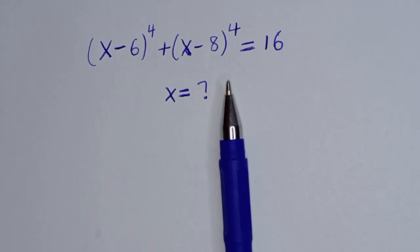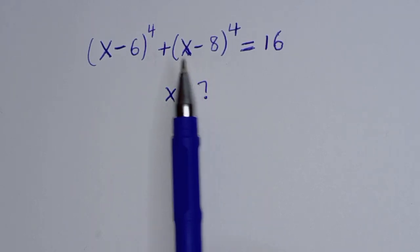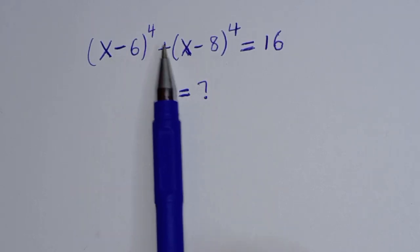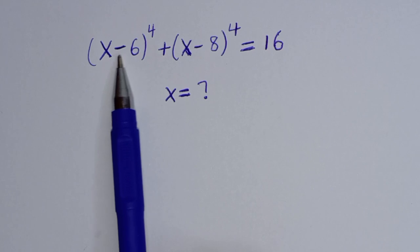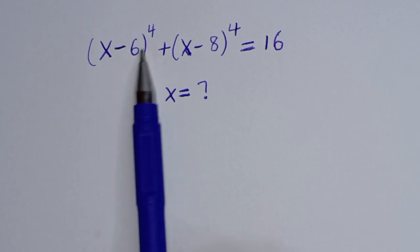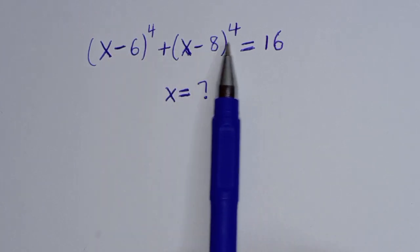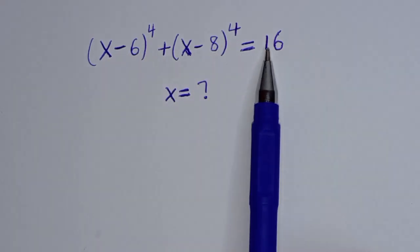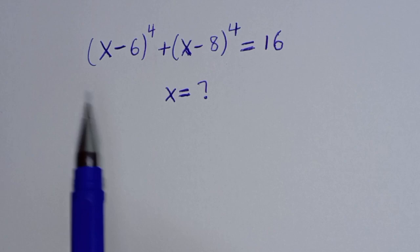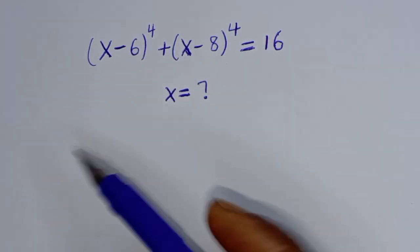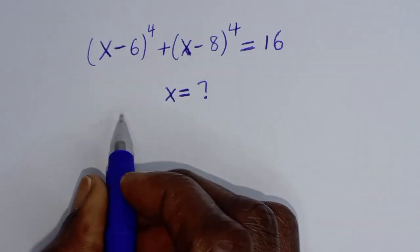Hello, how to solve for x from this given nice math problem: x minus 6 to the power of 4 plus x minus 8 to the power of 4 is equal to 16. Solution.